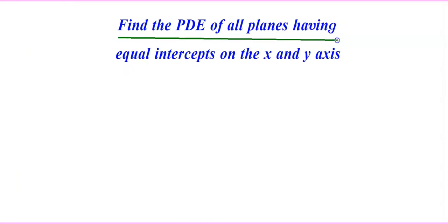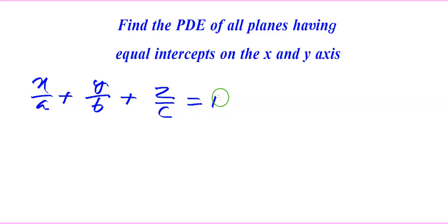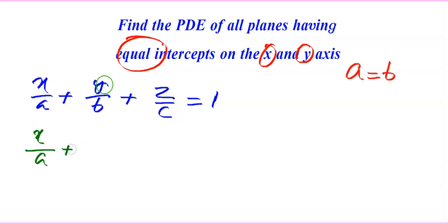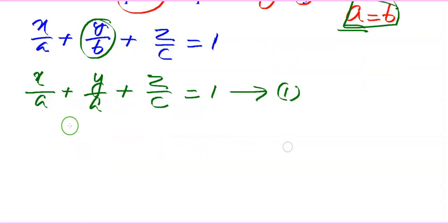Next question: find the partial differential equation of all planes having equal intercepts on the x and y axes. We know that the equation of a plane in intercept form is x/a + y/b + z/c = 1. Here, since x and y have equal intercepts, a = b. So the equation becomes x/a + y/a + z/c = 1. This is equation 1. We have to eliminate arbitrary constants a and c.